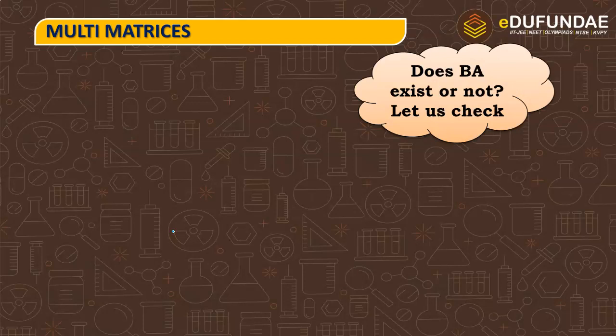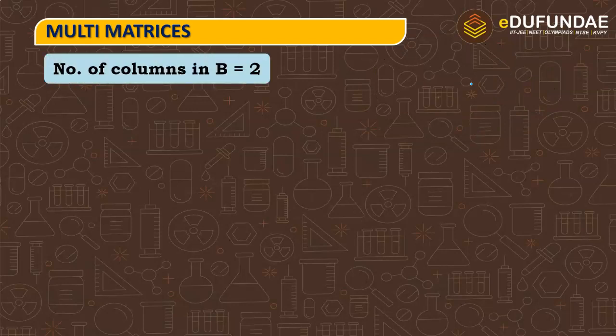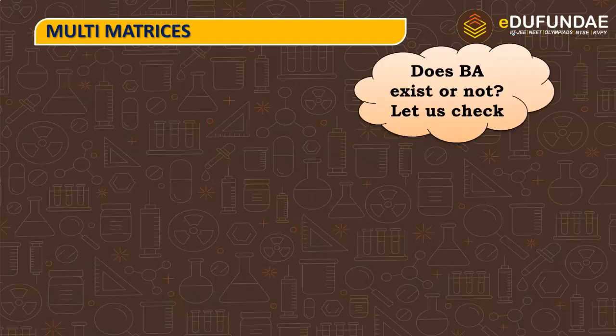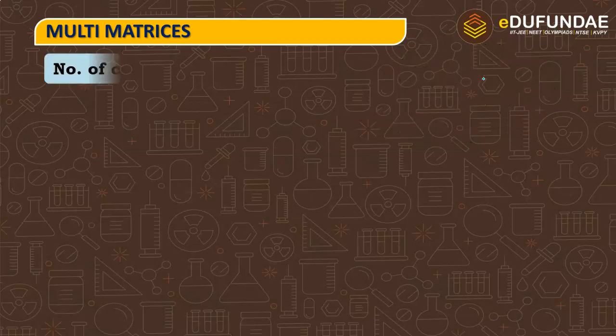Now, next we want to find out BA. Before that, we will check that BA exists or not. Again, I know that BA exists or not. So, first of all, the matrix, which is B, number of columns, which is A matrix, number of rows.